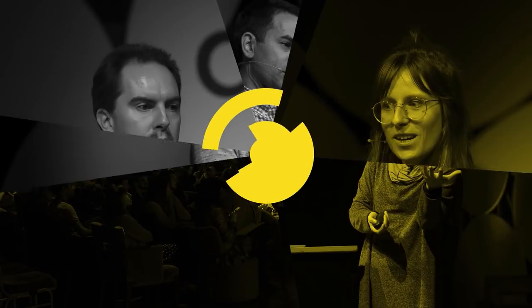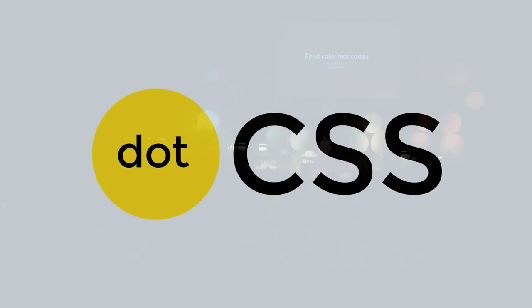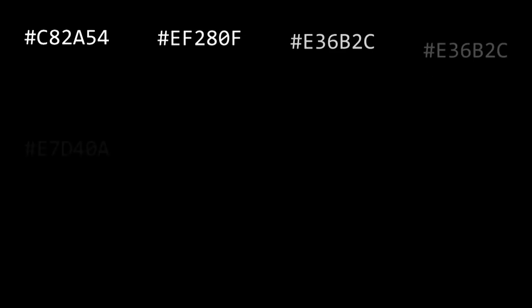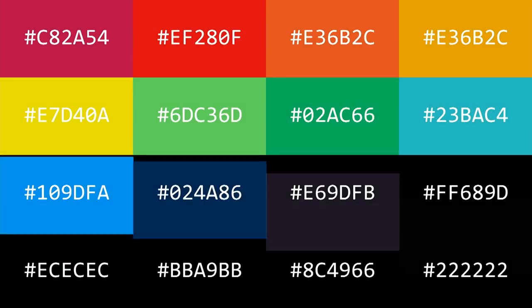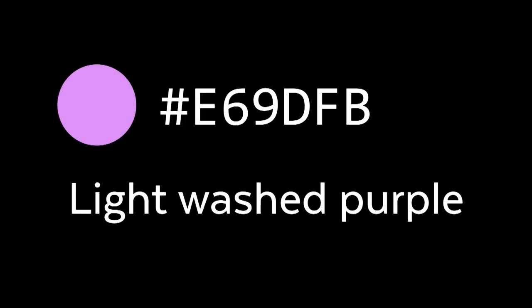A couple years ago, I found I had a special ability. I can read color hex codes. Hex codes are the six-digit alphanumerical codes that we developers use to set colors every day. My ability is that I can look at the code and from just the code itself I can tell you what the color is. The reason I can do this is not because I'm some super developer. It's the opposite. I am colorblind.